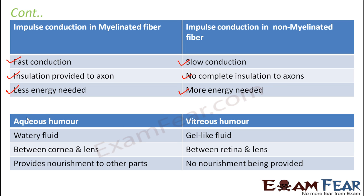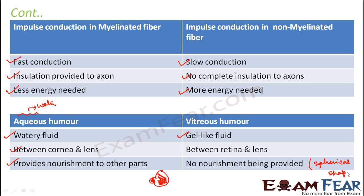Aqueous humor and vitreous humor. The word aqua relates to water, so aqueous humor is a watery fluid, whereas vitreous humor is a gel-like fluid. Aqueous humor is present between the cornea and the lens, and its function is to provide nourishment to other parts. Vitreous humor is present behind the lens and retains the spherical shape of the eyeball. That is how they differ from each other.